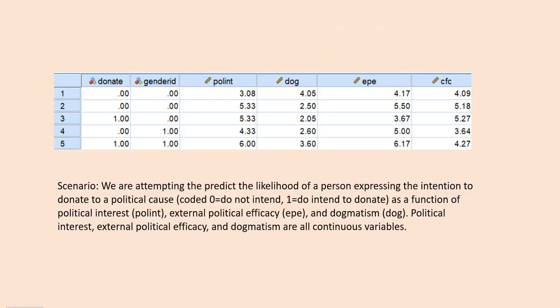In our scenario, we are attempting to predict the likelihood of a person expressing the intention to donate to a political cause as a function of political interest, external political efficacy, and dogmatism. The dependent variable, intention to donate to a political cause, is a binary variable coded zero for do not intend and one for do intend to donate. Political interest, external political efficacy, and dogmatism are treated as continuous.